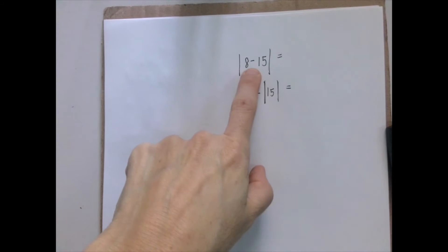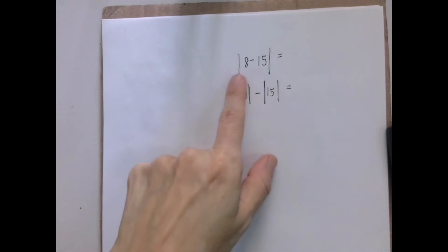So we cannot just go in and make this a plus. Instead, we have to perform the subtraction and then take the absolute value of the result.